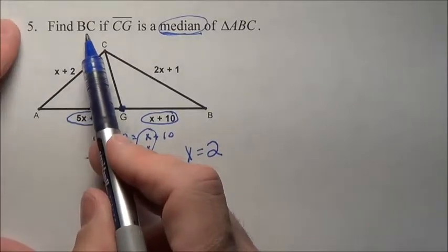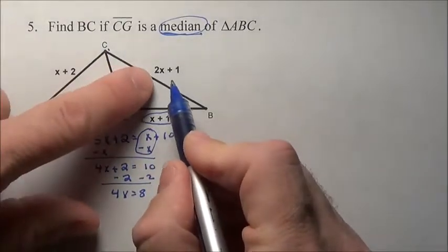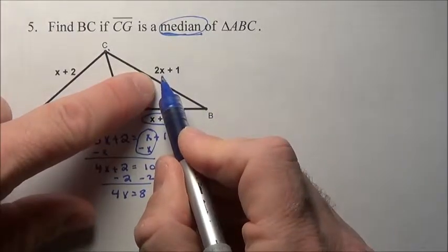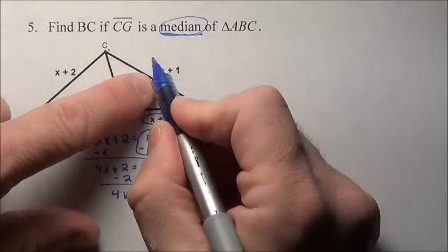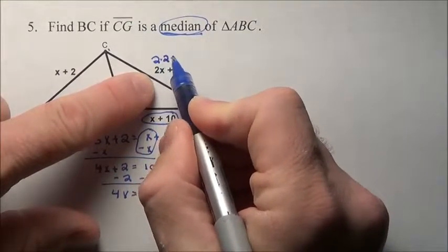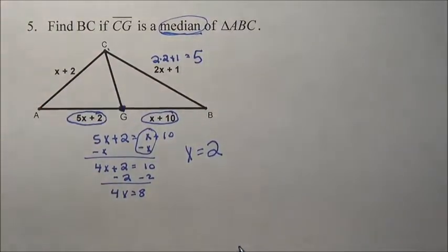It wants to know what is the length of BC. Well, the expression that represents BC's length is 2 times whatever x is plus 1. We just found x to be 2. So 2 times 2 plus 1, 4 plus 1, 5. That must be its length.